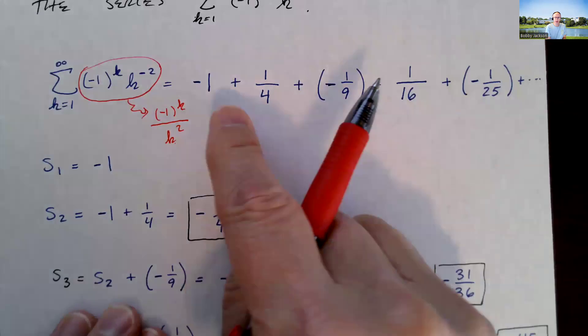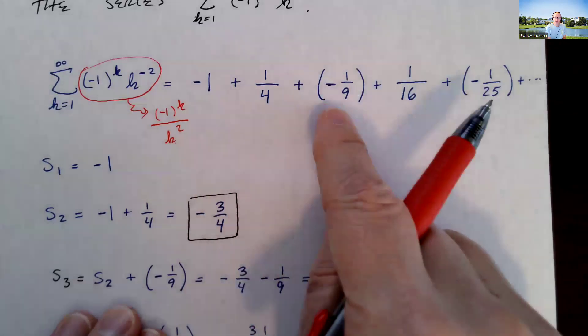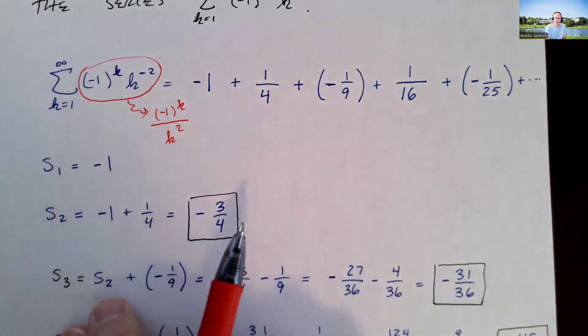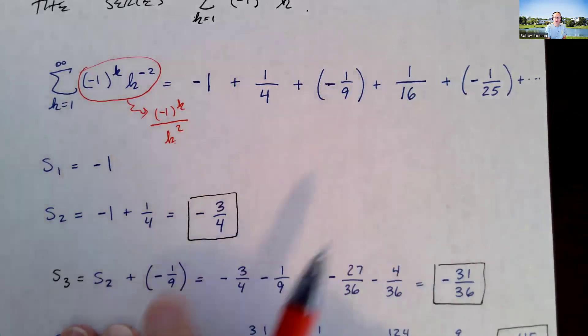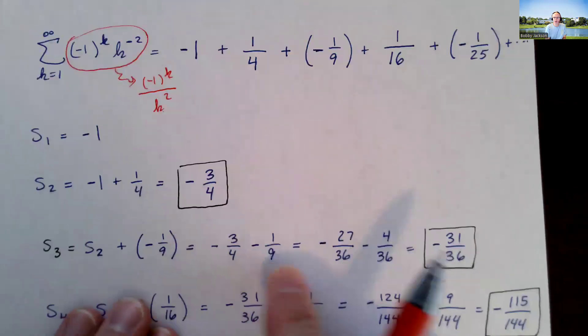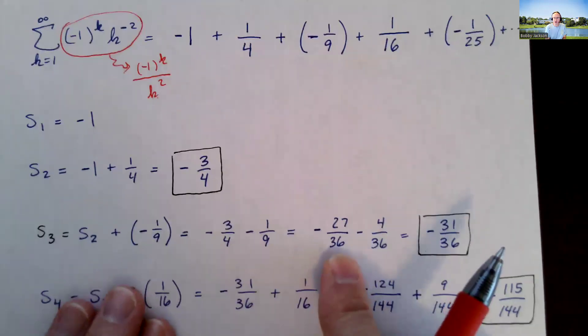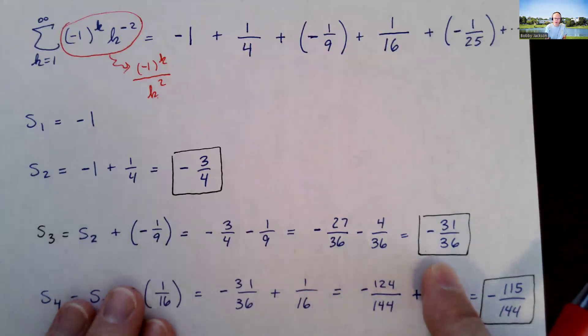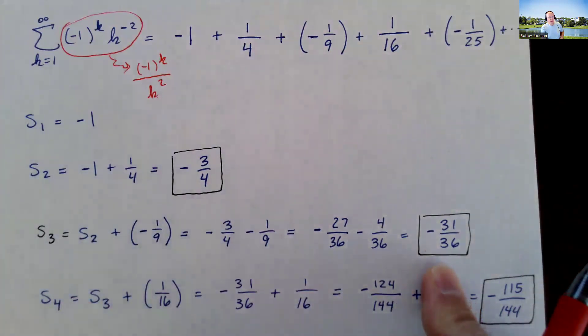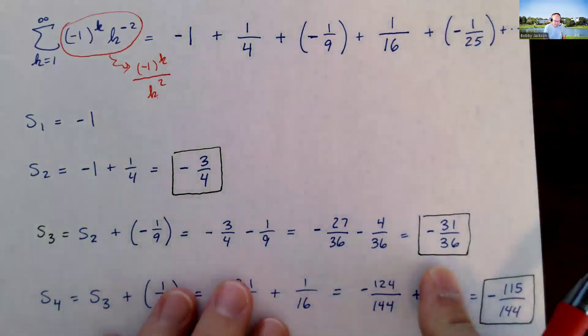s sub 3 will be a sub 1 plus a sub 2 plus a sub 3. Or I can just think about it as s sub 2, which is the sum of the first two, plus a sub 3. If I do the arithmetic and find my common denominator. Achieve is asking for us to give the exact value in a simplified fraction, so make sure you do that. This is the result.